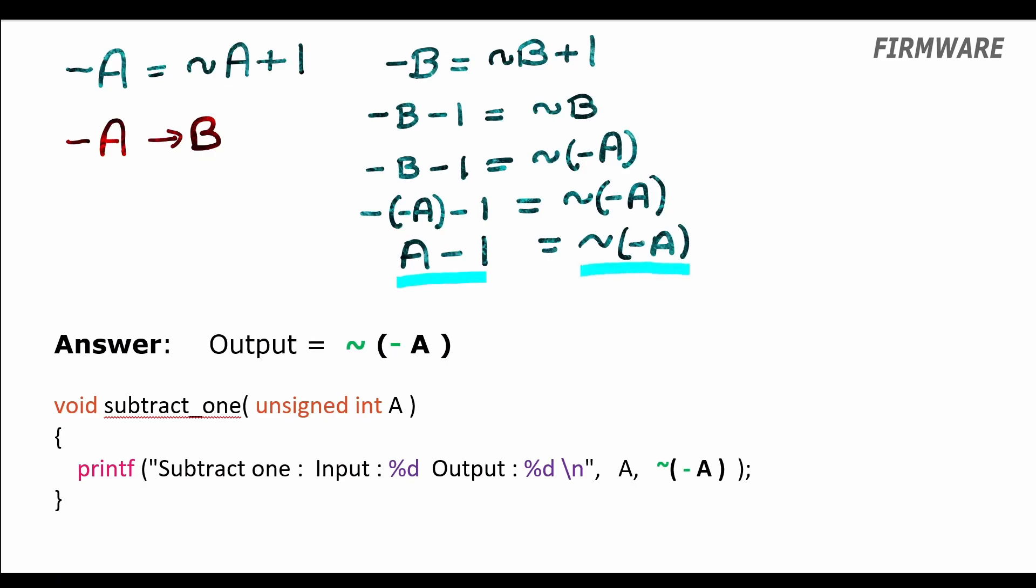But now going further ahead, doing inversion on both sides, we have inversion of a minus 1 equal to inversion of inversion of minus a. That is, inversion of a minus 1 is equal to minus a.